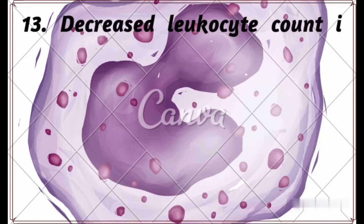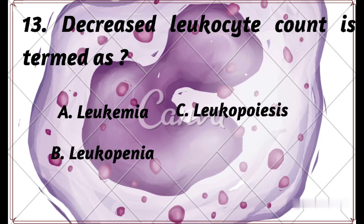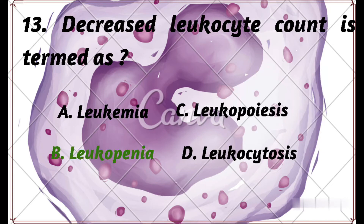Question number 13: Decreased leukocyte count is termed as — Option A: leukemia, Option B: leukopenia, Option C: leukocytosis, Option D: leukocytosis. The right answer is Option B: leukopenia.